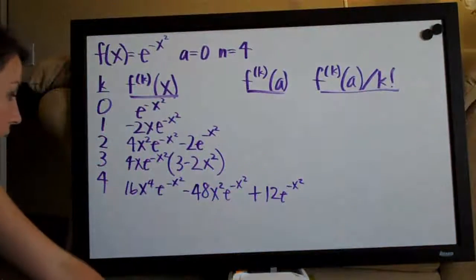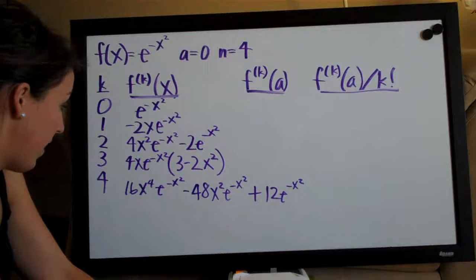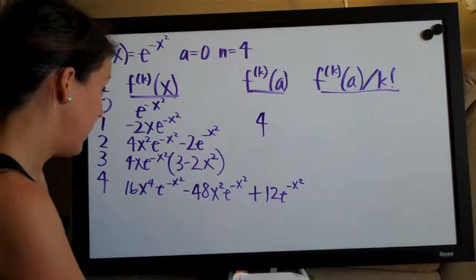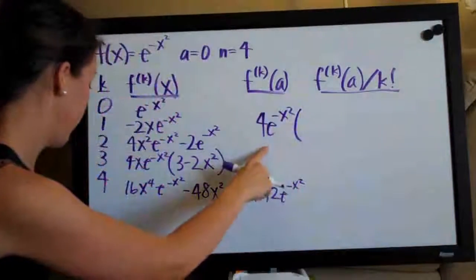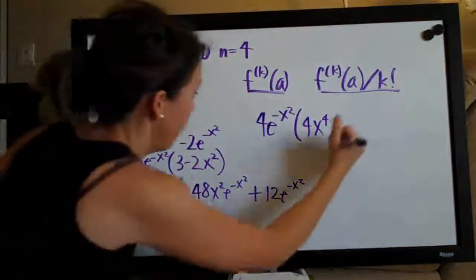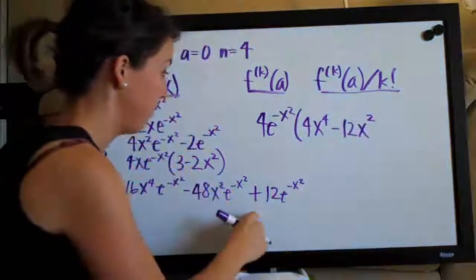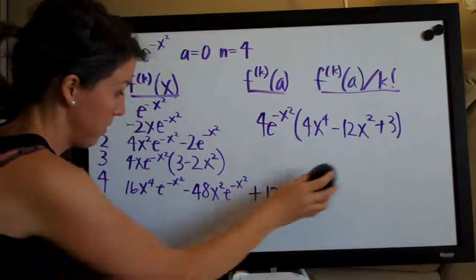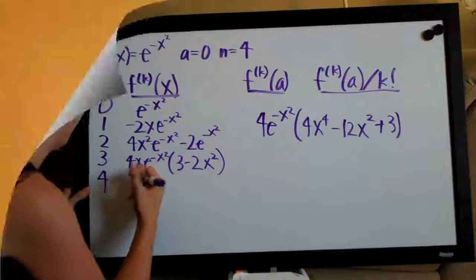Looks like we could leave this if we wanted to, but I think we should go ahead and simplify. I'd like to pull out 4·e^(-x²), so if we pull that out we're looking at times (4x⁴ minus 12x² plus 3). Oh good — I had done this ahead of time and that's what we got last time. So let's begin.